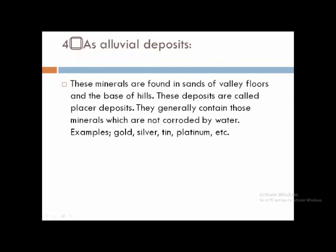How we obtain minerals from alluvial deposits or placer deposits: minerals found in the sands of valley floors and the base of hills are known as placer deposits. These minerals are not corroded by water. Examples include gold, silver, tin, and platinum — carried down by rivers coming from the mountains.